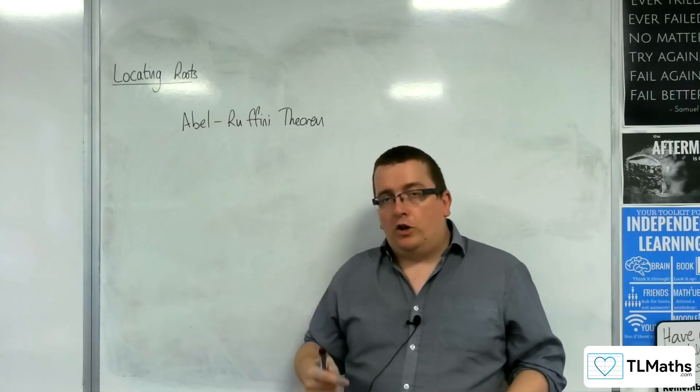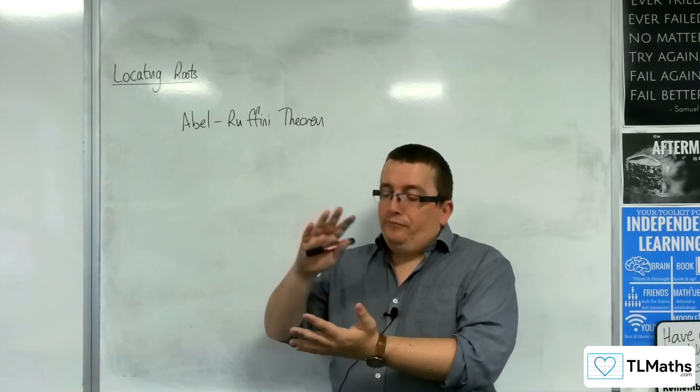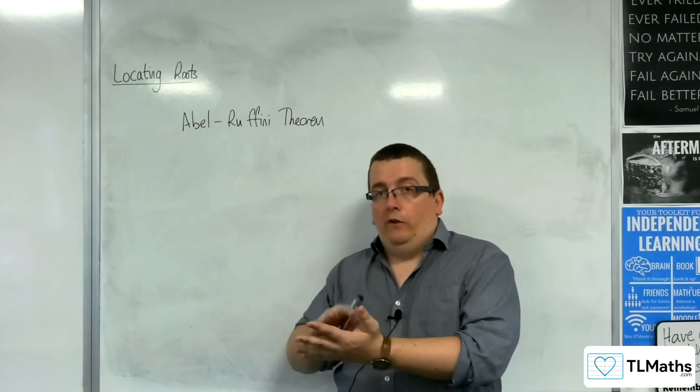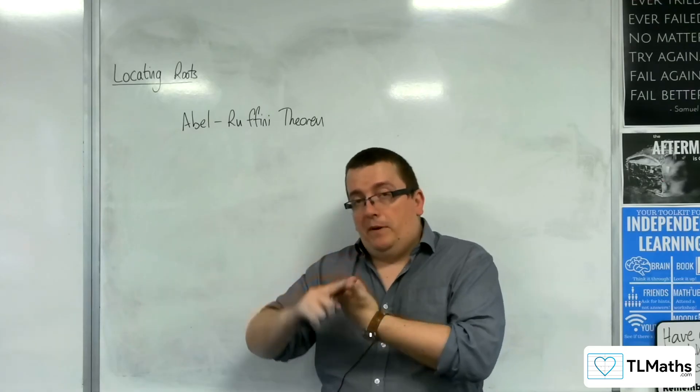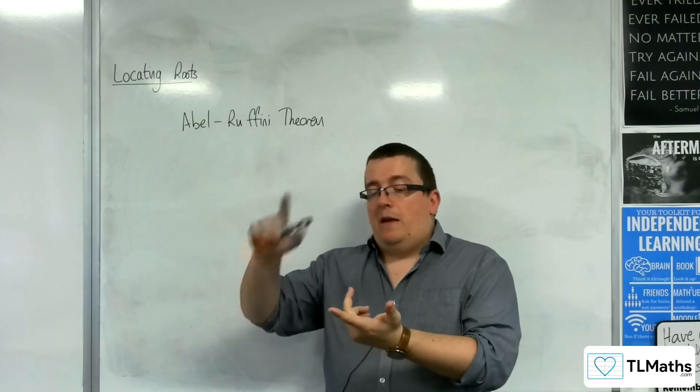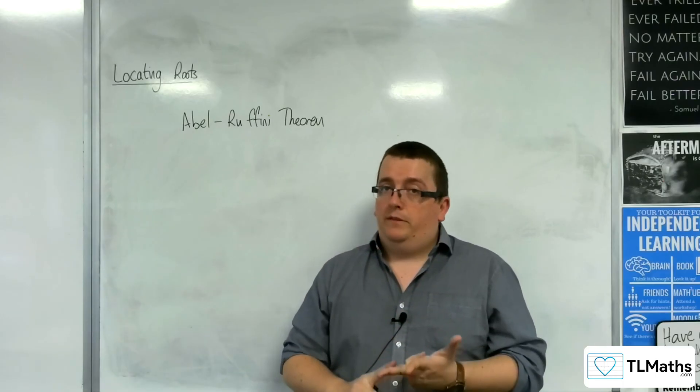So, we're going to look at three aspects of it, three ways of looking at finding those roots. Firstly, by the change of sign method. Then, we're going to use the x equals g of x method. And then, we've got the Newton-Raphson method.